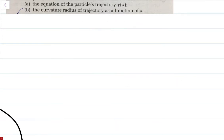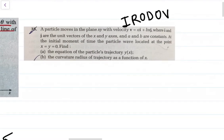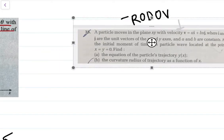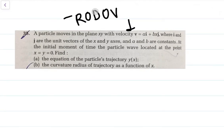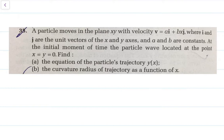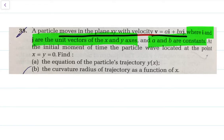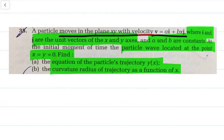We can easily do this by simple mathematics. Now I will shift to the second question — it is a calculus-based question, so be ready for some calculus. The question states: a particle moves in the xy-plane with velocity v = aî + bxĵ, where î and ĵ are unit vectors of the x and y axes, and a and b are constants. At the initial moment the particle was located at x = y = 0. Find the equation of the particle's trajectory and the radius of curvature of the trajectory as a function of x.